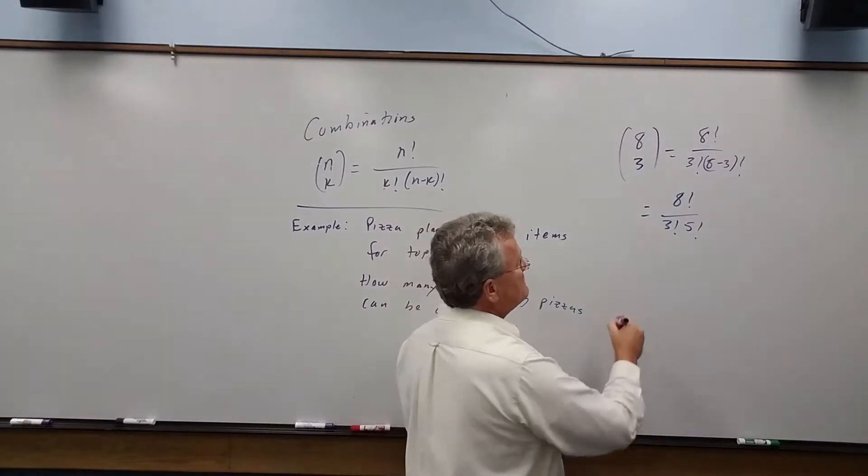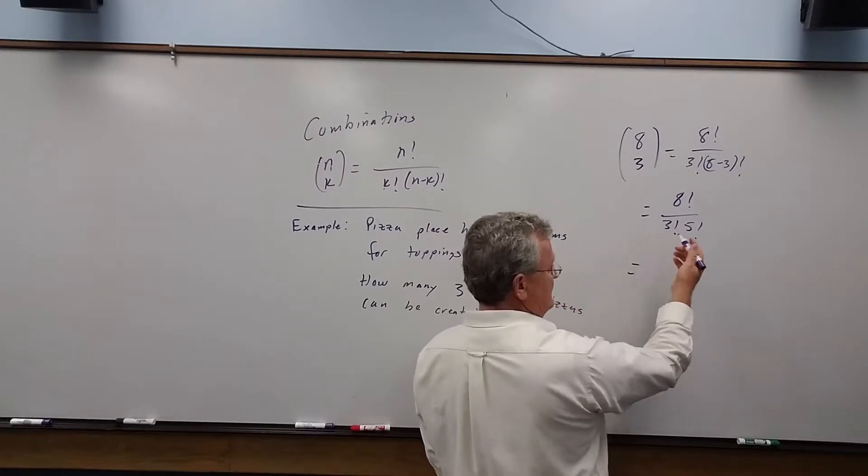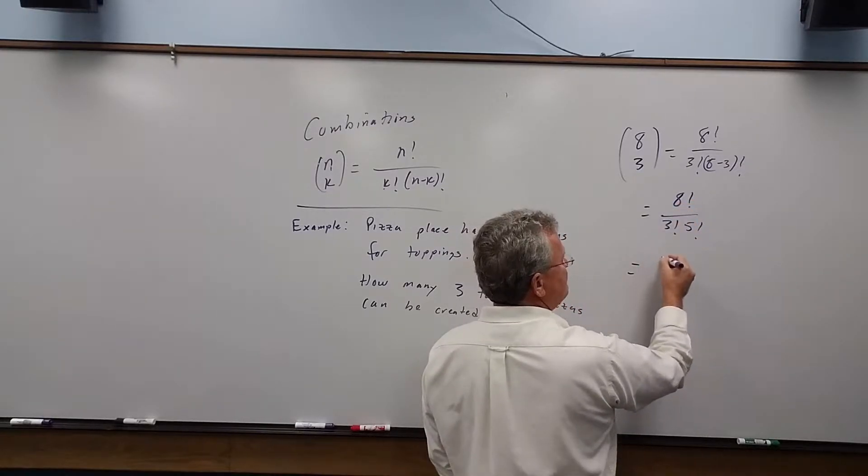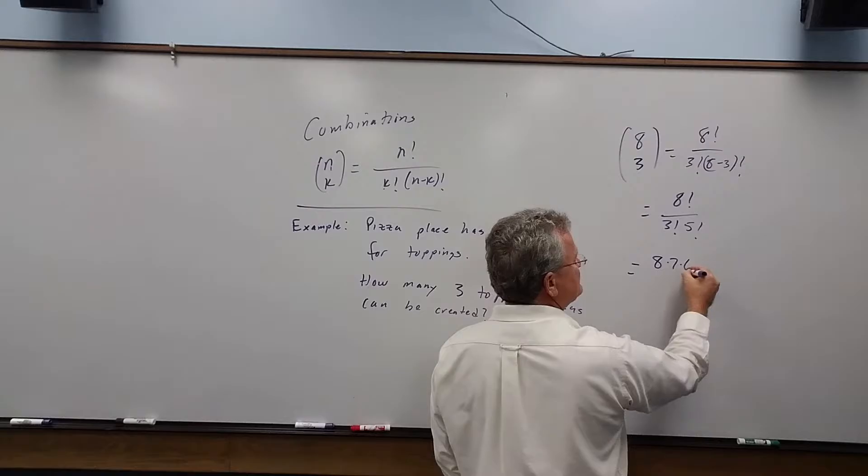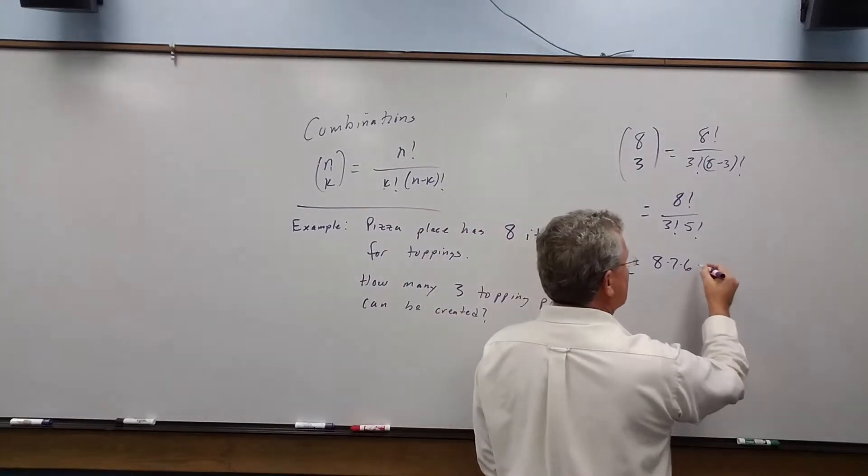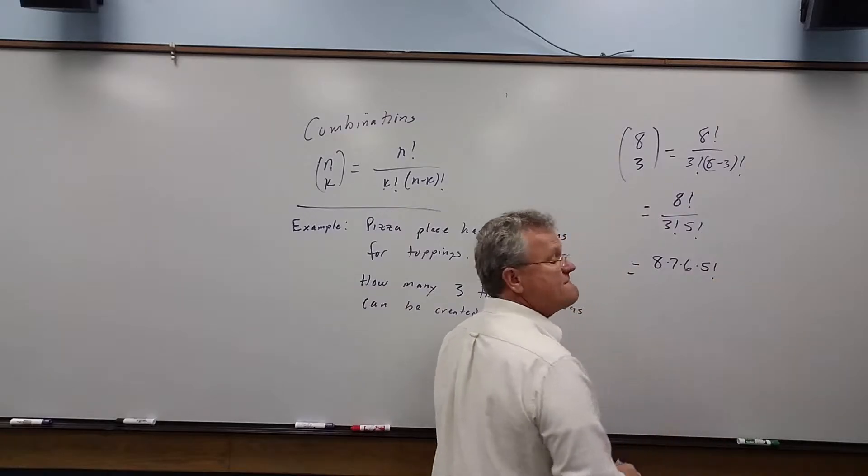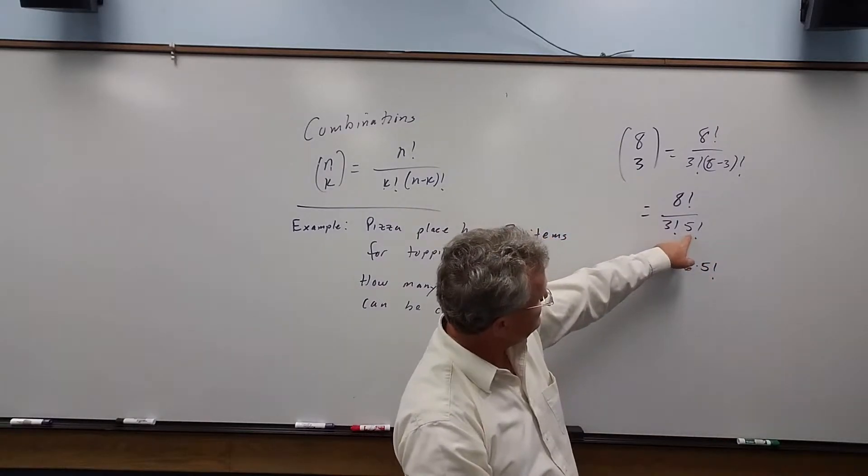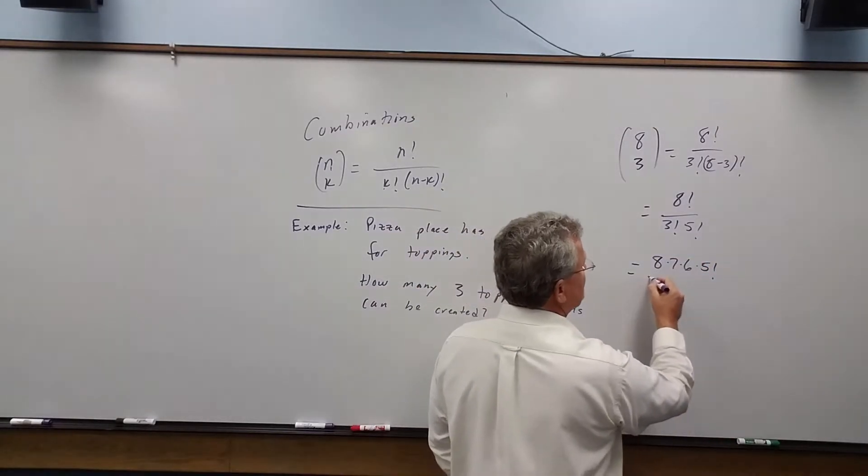Of course, we could plug this in our calculator, but let's just do this by hand at this point. Eight factorial is eight times seven times six, and then let's write five, four, three, two, one as five factorial, so we can cancel with that five factorial.